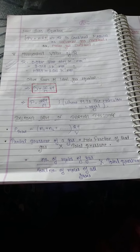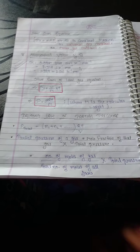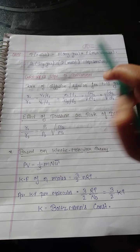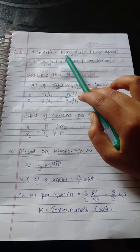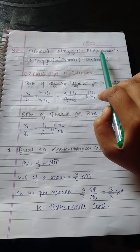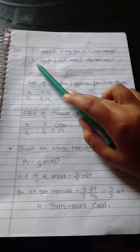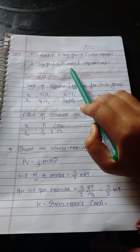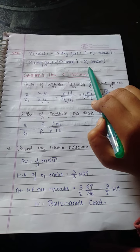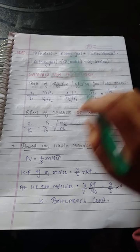Now P moist is equal to P dry gas plus P water vapor. P dry gas is equal to P moist minus aqueous tension. These are formulas.